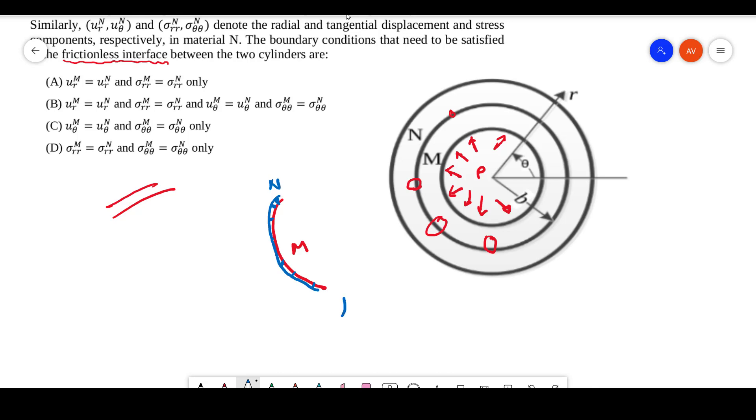That means you cannot have different radial displacements for M and N, because as you have some displacement for M, it should be equally adjusted by N. Therefore, these two parameters—the radial displacement for M and the radial displacement for N—should be equal. So here we are finding that first condition: ur^M = ur^N.